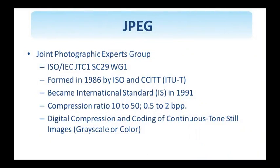In this segment, we will discuss the JPEG compression standard. It stands for Joint Photographic Experts Group. JPEG is a working group which was formed in 1986 by ISO and CCITT. It became an international standard in 1991, more than 20 years ago. It covers compression ratios 10 to 50, or resulting bits per pixel 0.5 to 2. The objective of JPEG is the digital compression and coding of continuous tone still images, both grayscale and color.